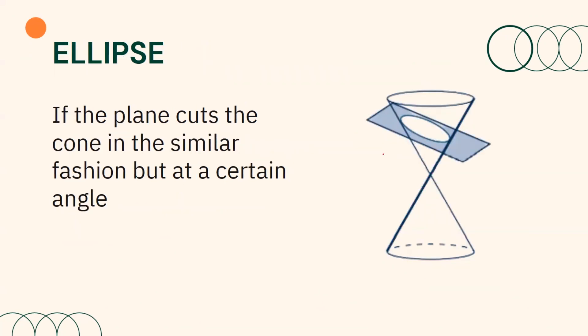However, if you cut the cone at a certain angle and not parallel to one side of the cone, then an ellipse is formed. Just like in the illustration, notice that the plane is not parallel to any side of the cone. Therefore, here is the ellipse being formed.